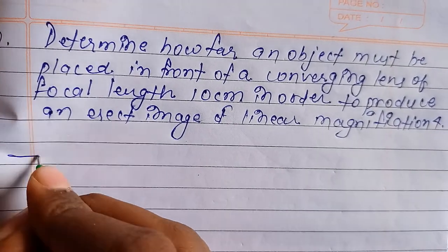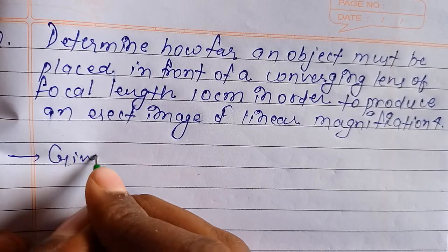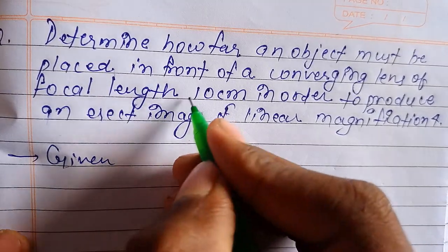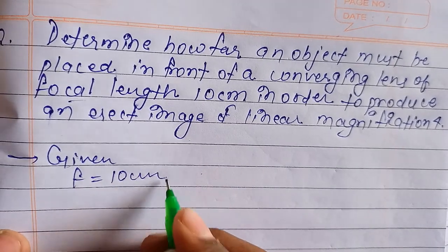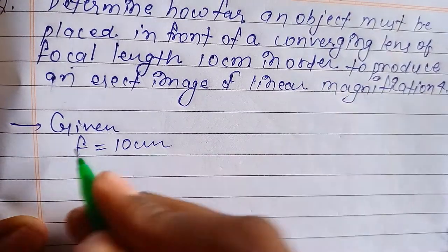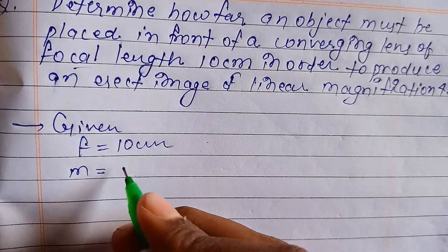So given, f equal to focal length, f equal to 10 cm, m equal to 4.